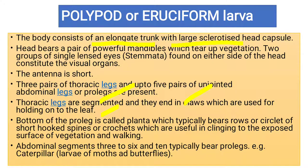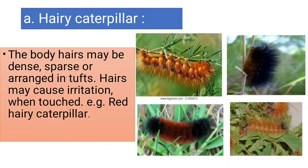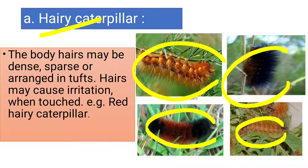True thoracic legs help with gripping, while abdominal pro-legs help in crawling, walking, and clinging to vegetation. All Lepidoptera — moths and butterflies — belong to polypod larvae. Examples include hairy caterpillars, which have dense or sparse body hairs, sometimes in tufts. If you touch them they cause irritation.